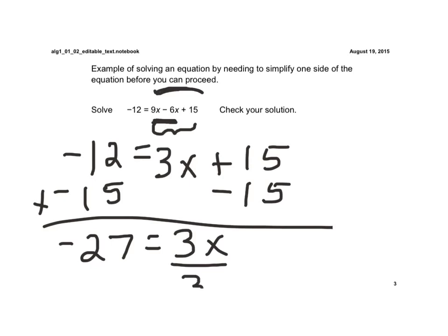And now we solve this by dividing both sides by 3, and we would get x is equal to negative 9. Remember, the answer is negative, as a negative divided by a positive is a negative.